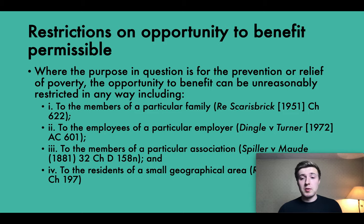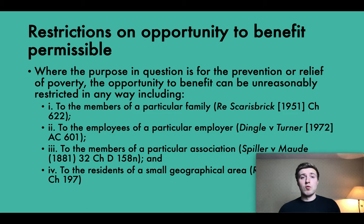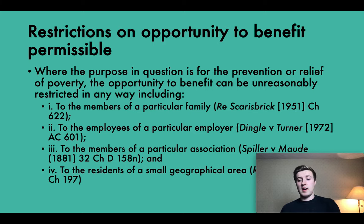Thirdly, to the members of a particular association. And lastly, to the residents of a small geographical area — including a small geographic location that is too narrowly defined in comparison to the purpose in question. This is in contrast to the usual rule where this would not be permitted and would be deemed unreasonable. Such restrictions do not prevent the purpose satisfying the public aspect of the public benefit test.